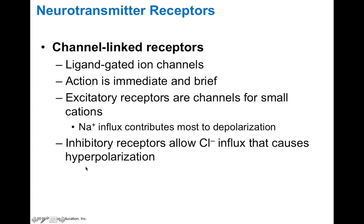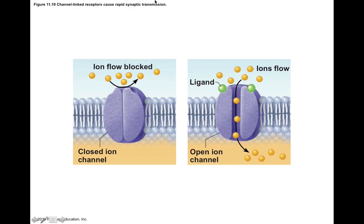The reason these actions are immediate is that they're basically just allowing ions to flow, and they're brief because the channels don't stay open very long. An example of a ligand-gated ion channel is where a neurotransmitter binds and the channel opens to allow ions to flow — such as acetylcholine binding to a nicotinic receptor, which allows sodium to flow into the cell. If sodium rushes in, you're bringing in positive charge which makes the inside of the cell more depolarized, so you'd call this excitatory current.